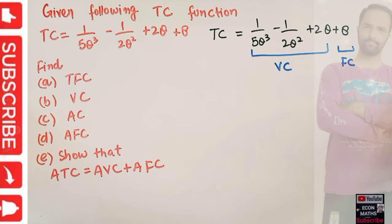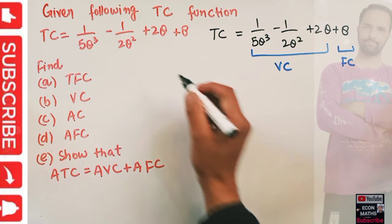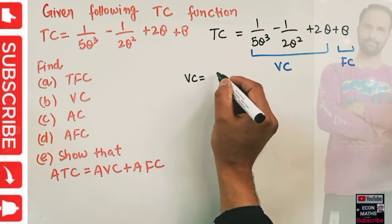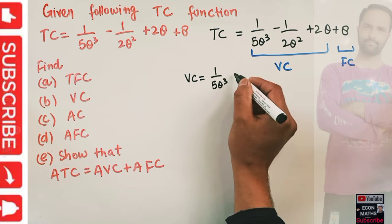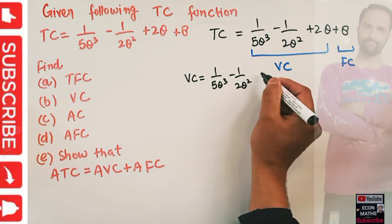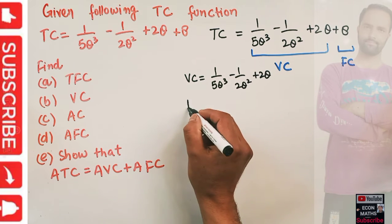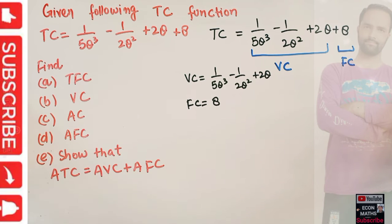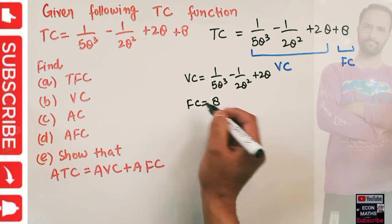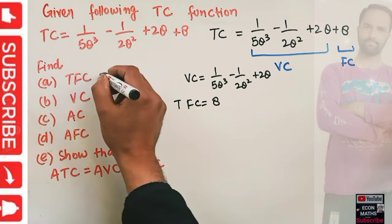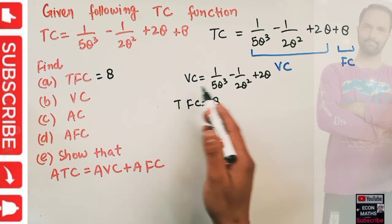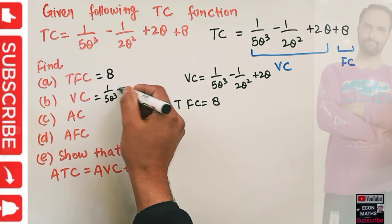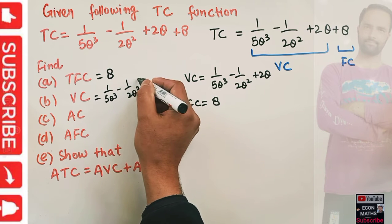So the first three terms are variable cost and the last term is fixed cost. Our variable cost is equal to 1/5 q³ − 1/2 q² + 2q. Fixed cost is simply 8 — it does not depend upon the level of output. So our total fixed cost is equal to 8.